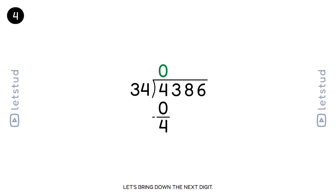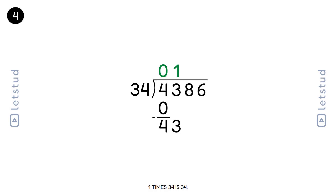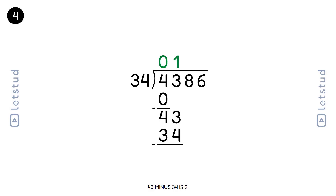Let's bring down the next digit. We have a remainder of 4 and bring down the 3 to make 43. 34 fits into 43 one time. 1 times 34 is 34. 43 minus 34 is 9.